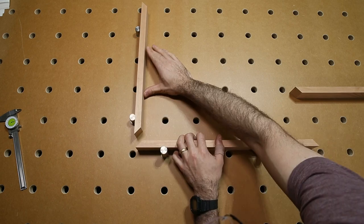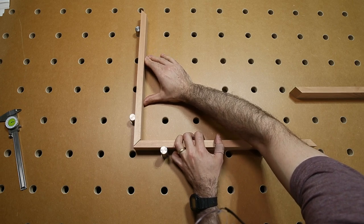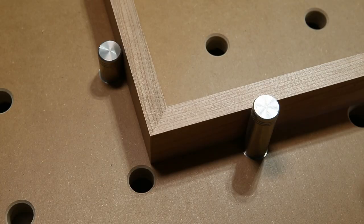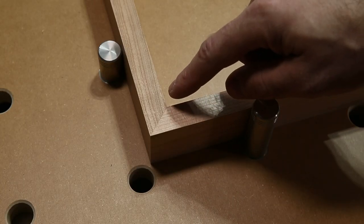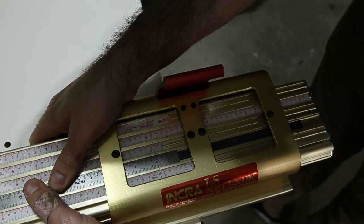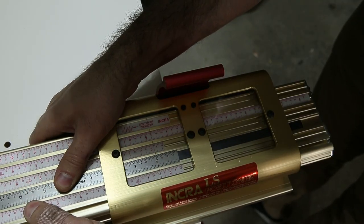So in order to check if my 45 looks accurate, I can line up the two pieces against the dogs, which are guaranteed to now be 90 degrees apart from each other. And you can see that there is essentially zero gap between my pieces there. So it's cutting really nice 45s.